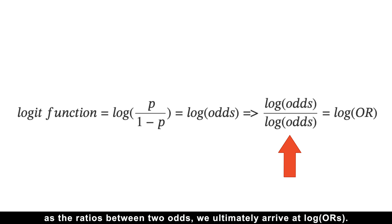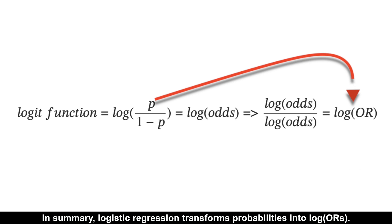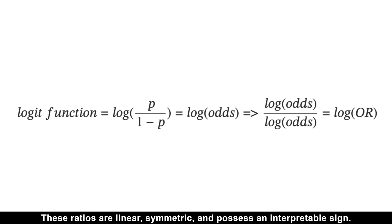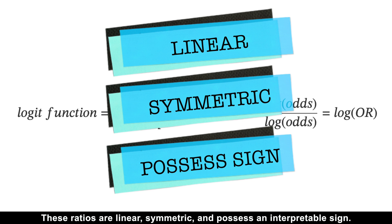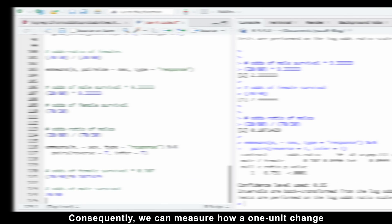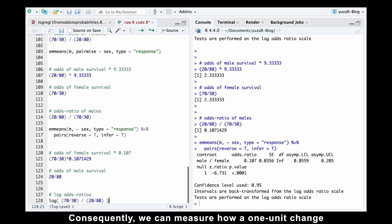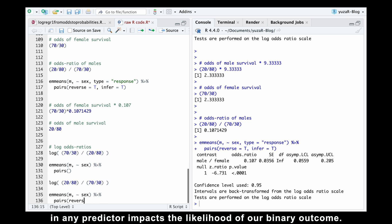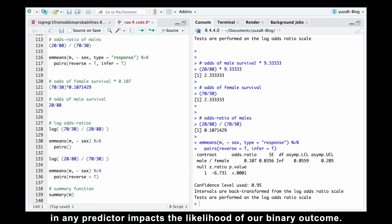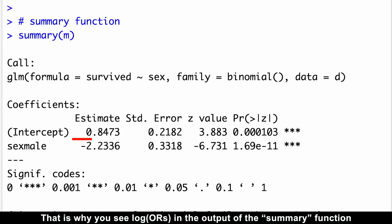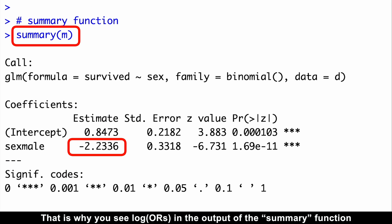In summary, logistic regression transforms probabilities into log odds ratios. These ratios are linear, symmetric, and possess an interpretable sign. Consequently, we can measure how a one unit change in any predictor impacts the likelihood of our binary outcome. That is why you see log odds ratios in the output of the summary function, because log odds ratios offer the most interpretable results.